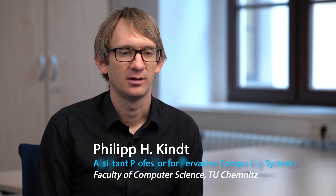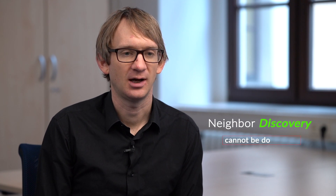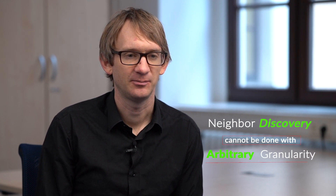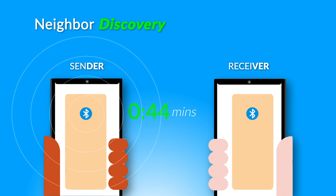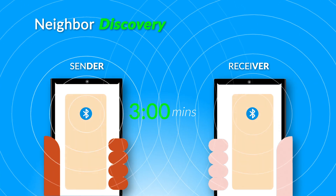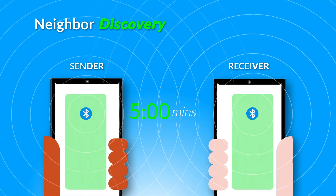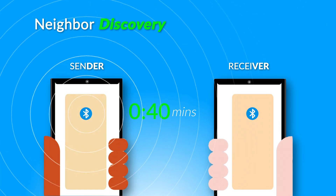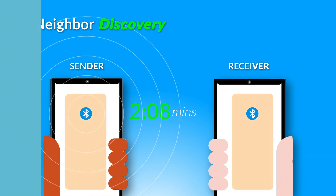Contact tracing can be done with an arbitrary granularity, but because there is a discovery latency, two devices have to stay within range for quite some time to see each other. For current tracing apps, this is around four to five minutes. So if you have multiple short contacts below four minutes, you risk losing them.